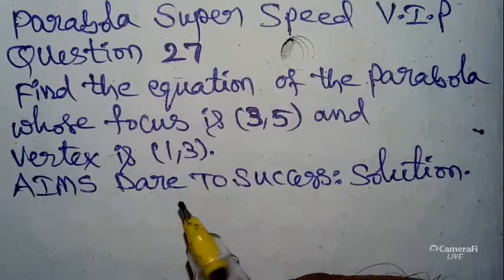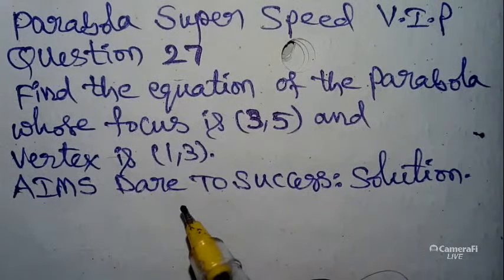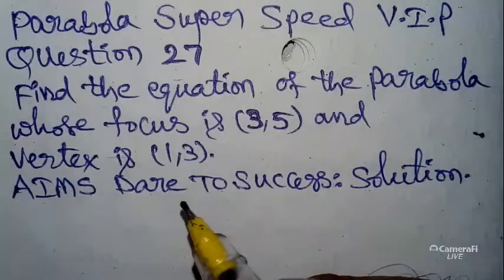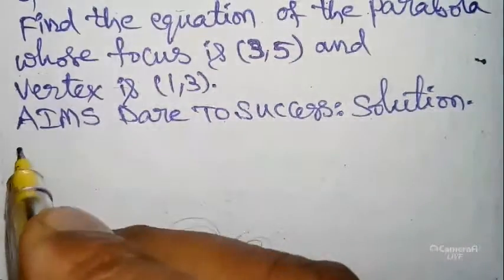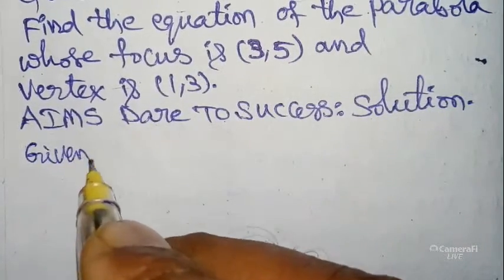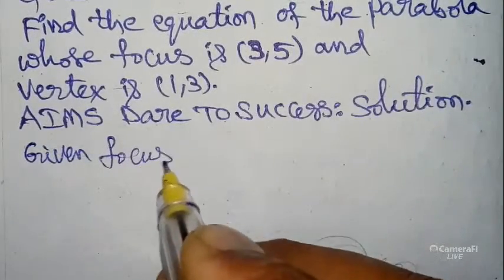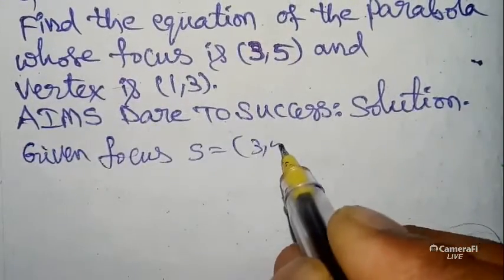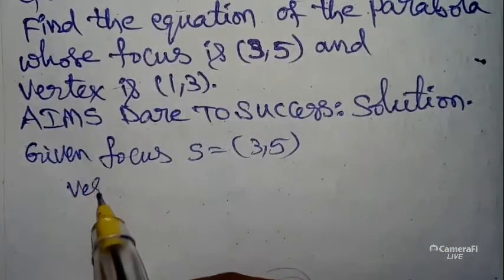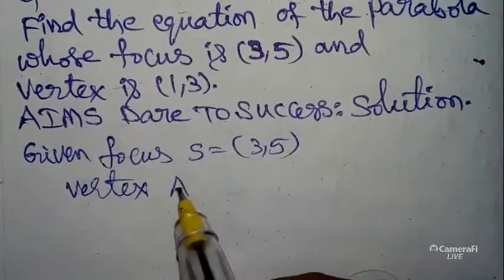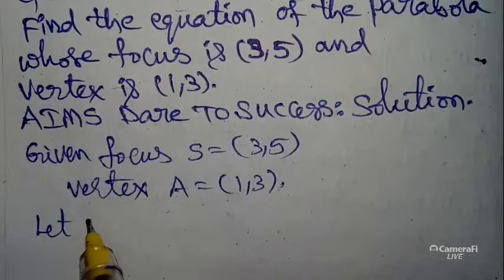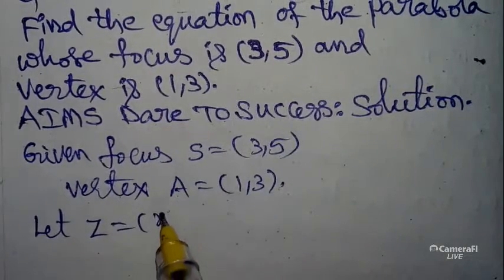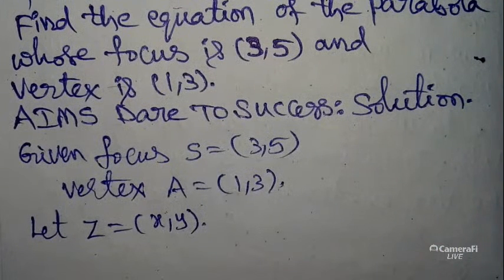Now I will explain this question with my neat and cute explanation logic — my magic explanation, step-by-step, especially made for you. Now I can start the solution. Given: focus S = (3, 5), vertex A = (1, 3). Let Z = (x, y) be any point on the parabola.